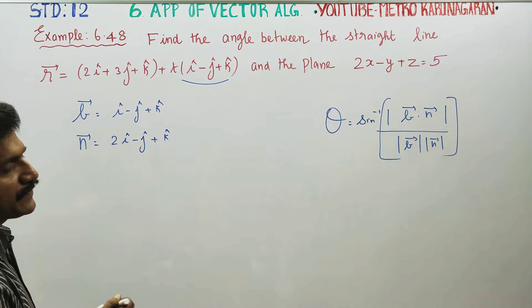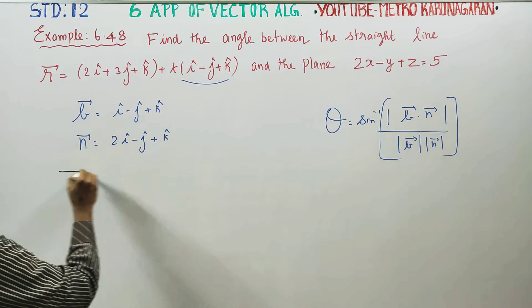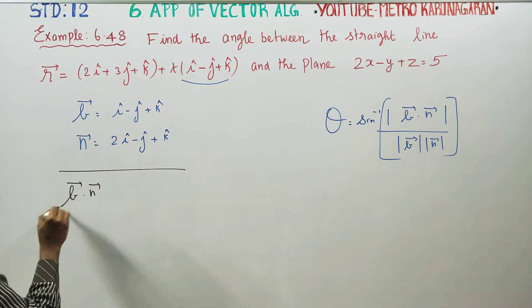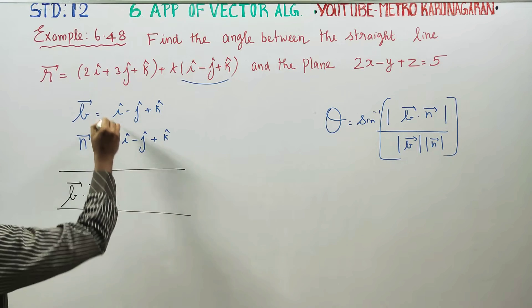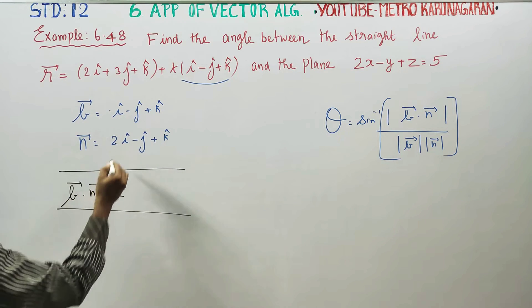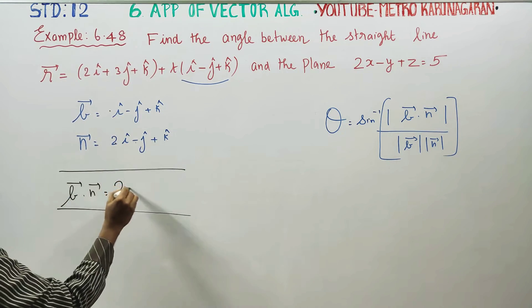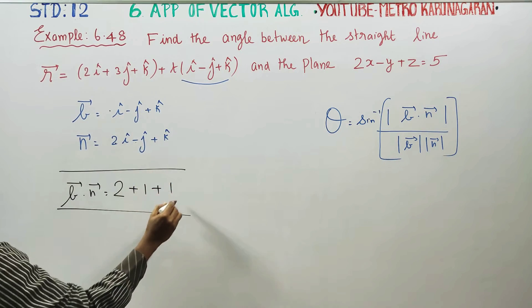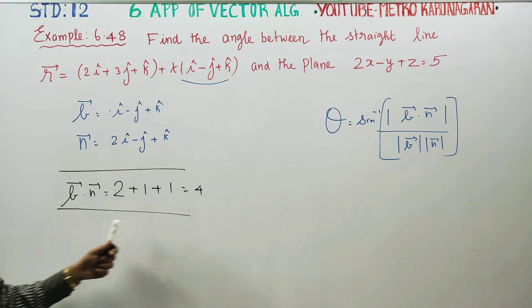First I am going to find b vector dot n vector. b vector dot n vector - 2 times 1 is 2, minus into minus is plus, 1 times 1 is 1, plus 1 times 1 is 1. Your answer is 4. b dot n is ready.